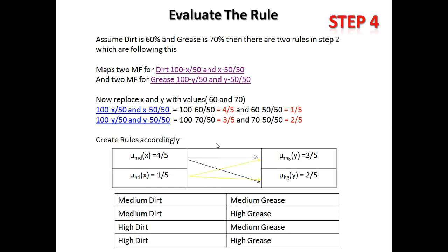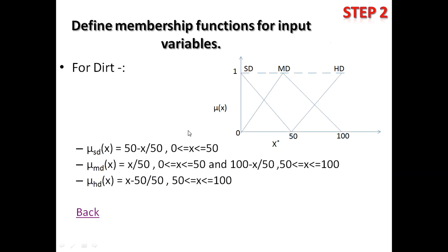After forming the rule base, we evaluate the rules. Suppose dirt is 60% and grease is 70%. We need to determine which rules apply — that is, which rules fall under these input values of 60 and 70. Looking at step two, for dirt we check which membership functions cover x = 60.